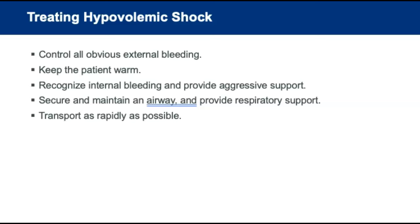For hypovolemic shock, stop the external bleeding first. The best initial method is direct pressure; if that does not work, use a tourniquet. Handle the patient gently and keep them warm. Recognize internal bleeding and provide aggressive general support. Secure and maintain an airway, provide respiratory support including oxygen and ventilations, and transport the patient as rapidly as possible to the emergency department.